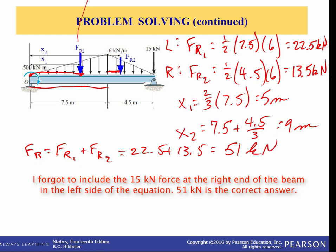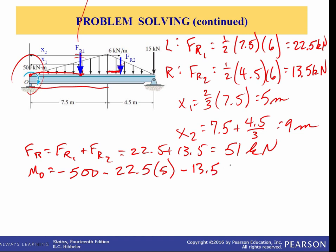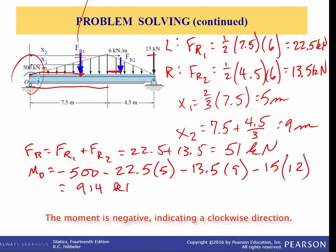The couple moment about point O equals: minus 500 for the applied clockwise couple, minus FR1 times X1 which is minus 22.5 times 5, minus FR2 times X2 which is minus 13.5 times 9, and minus 15 times the beam width of 12 meters for the applied 15 kilonewton force. The resultant moment is 914 kilonewton-meters.